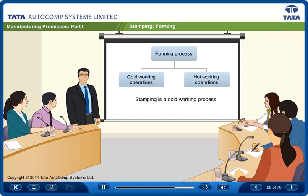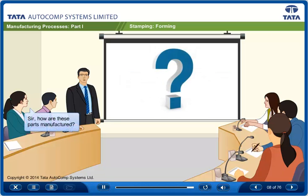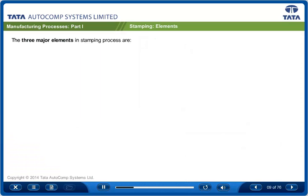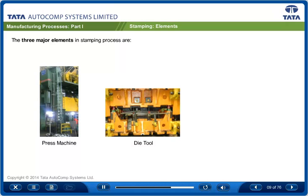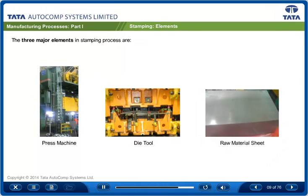We will go into these details later, but at the moment remember that stamping is a cold working process. There are three major elements in the stamping process: a press machine, a stamping tool or die tool, and raw material in sheet form.